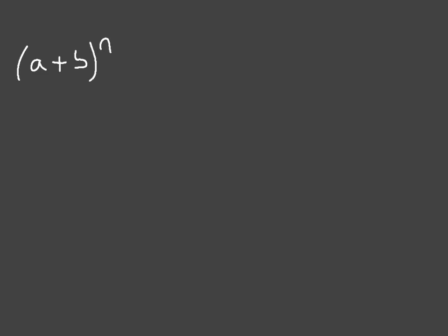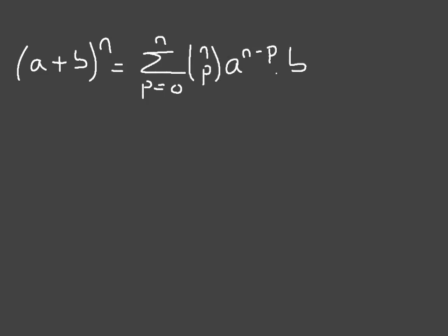In this video, we'll learn how to use the binomial expansion formula. The binomial expansion formula tells us that (a + b) raised to some power n, where n is a positive whole number, is equal to the sum from p equals 0 up to p equals n of the binomial coefficient (n, p) times a to the power of n minus p times b to the power of p.